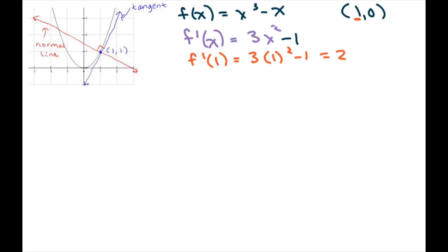And that gives you two. So the slope of the tangent line equals two and the slope of the normal line is a negative reciprocal. So that's negative one half.